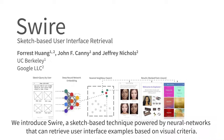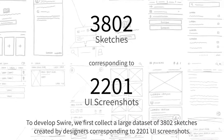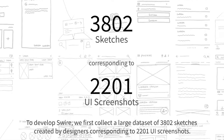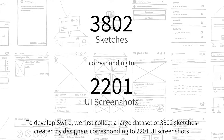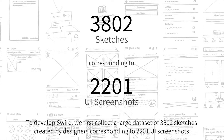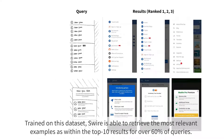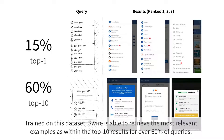We introduce Swire, a sketch-based technique powered by neural networks that can retrieve user interface examples based on visual criteria. To develop Swire, we first collect a large dataset of 3,802 sketches created by designers corresponding to 2,201 UI screenshots. Trained on this dataset, Swire is able to retrieve the most relevant examples within the top 10 results for over 60% of queries.